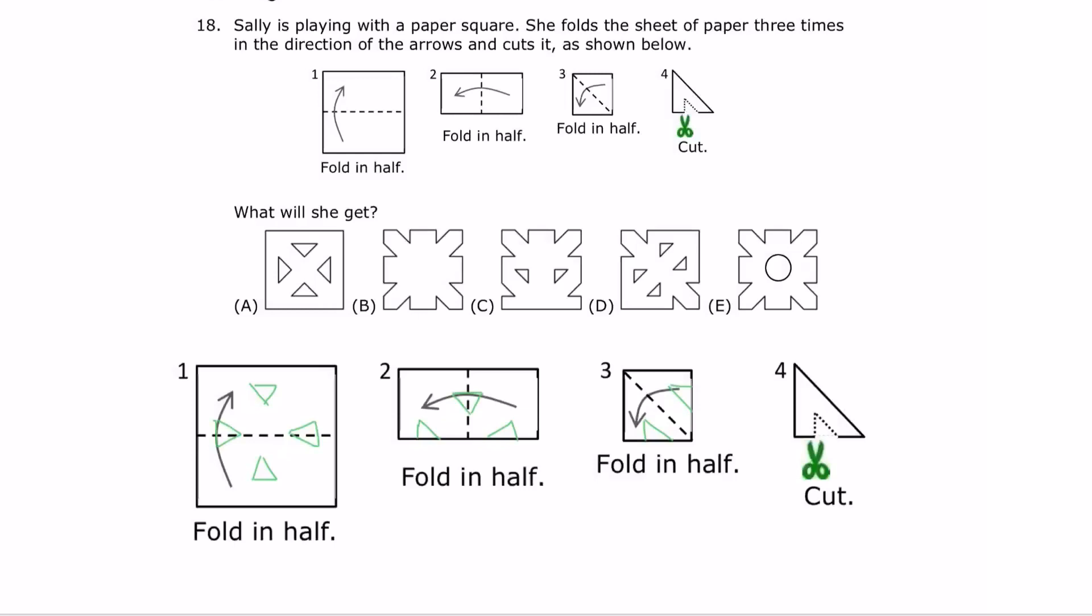To do this problem, I'm going to start backwards. I'm going to start in the fourth step, over here. When she cuts out that triangle and she unfolds it, she will get this over here, with the cutout triangle being the green triangles I have drawn.